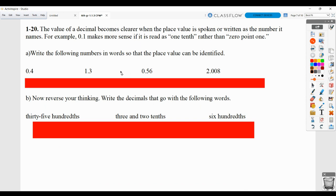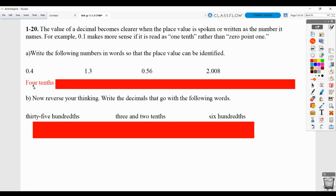Here we are going to look at writing these in words so that the place value can be identified. So what we have is we have a four in the tenths place. So what we'd say is four tenths. If you said zero and four tenths, that would be fine. Here we have a one, and then we have a decimal point, which means we say the word and. And then three is in the tenths place. So one and three tenths.